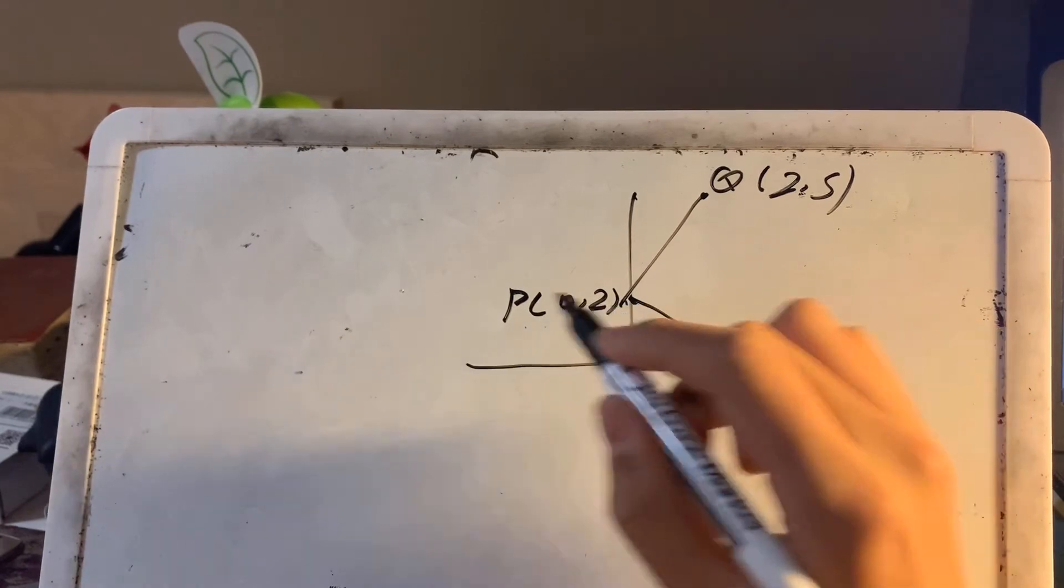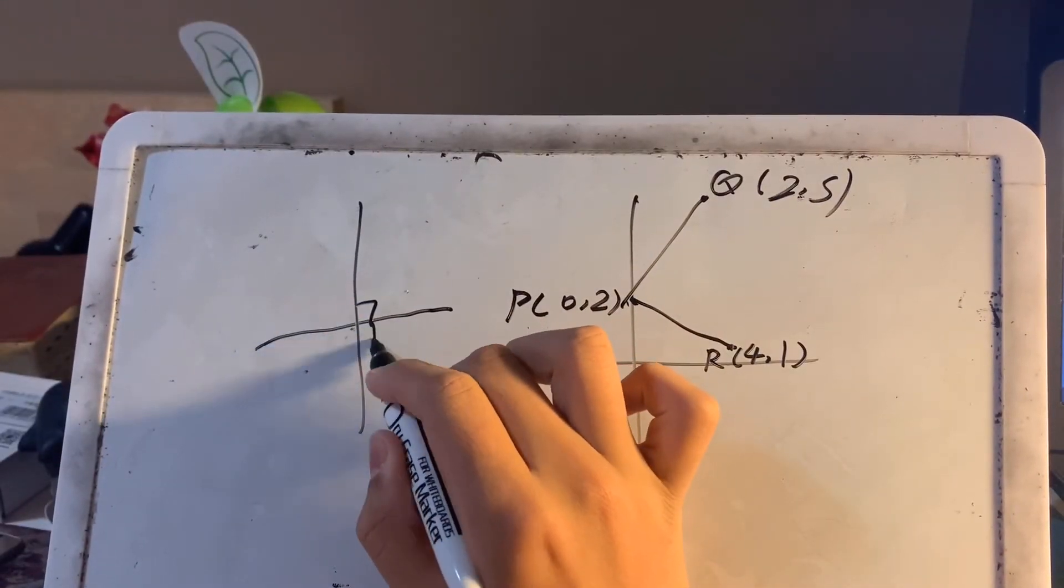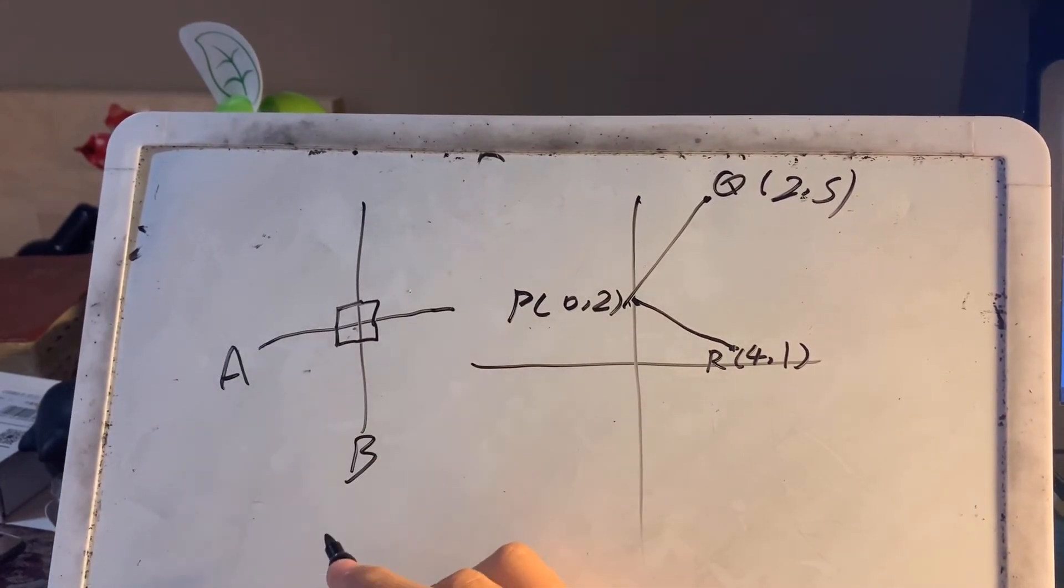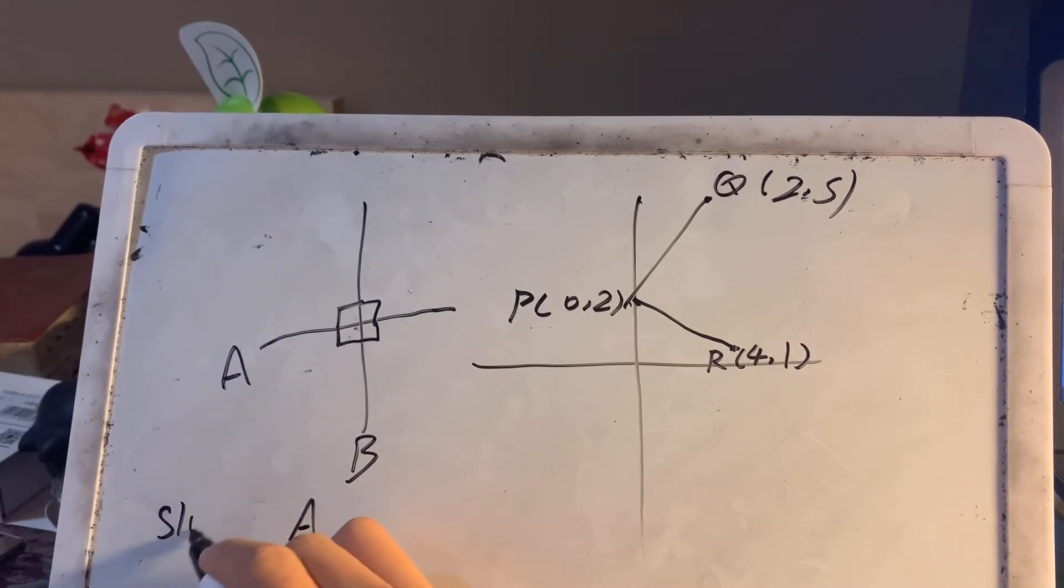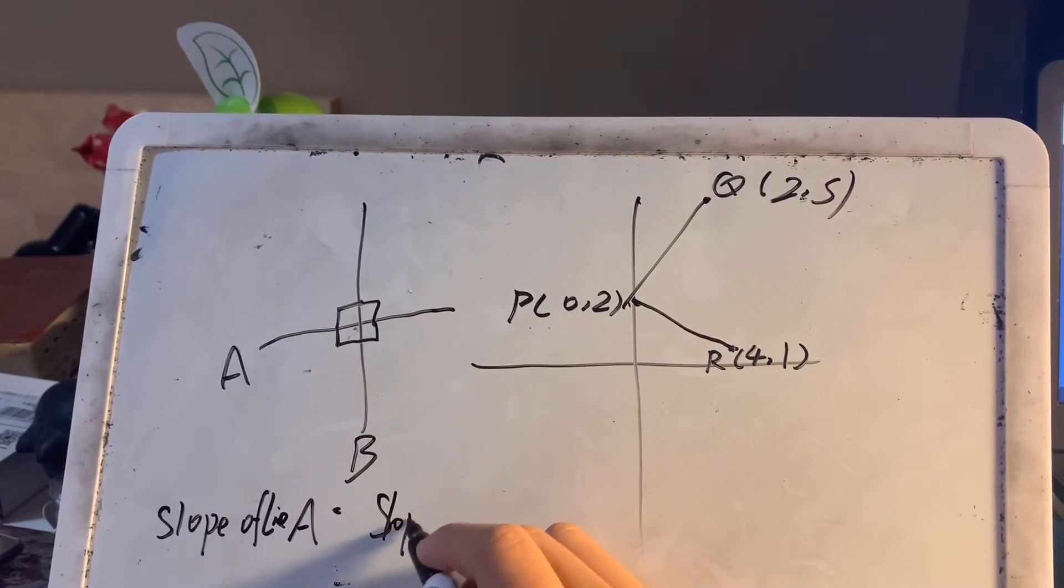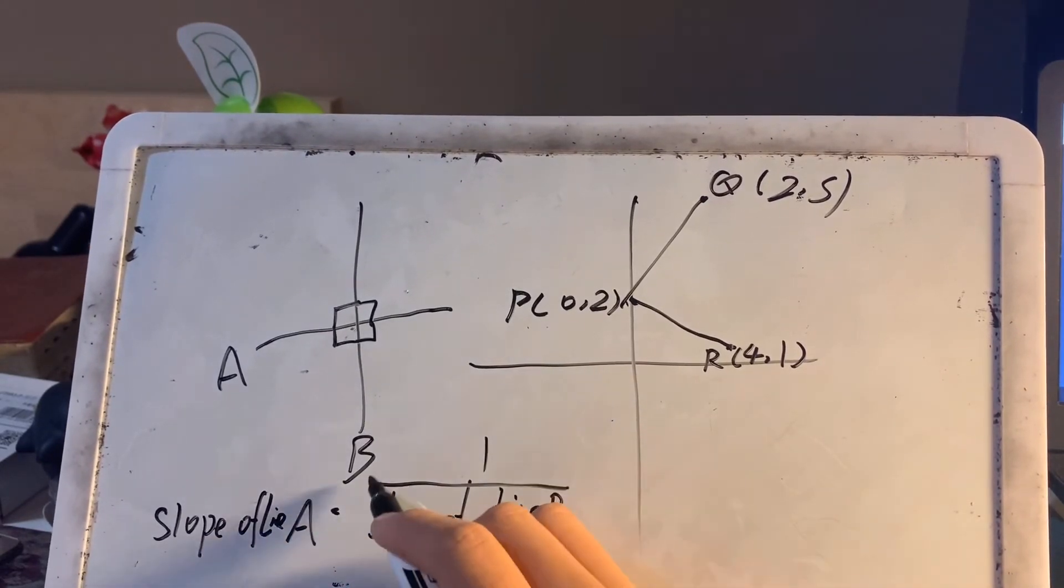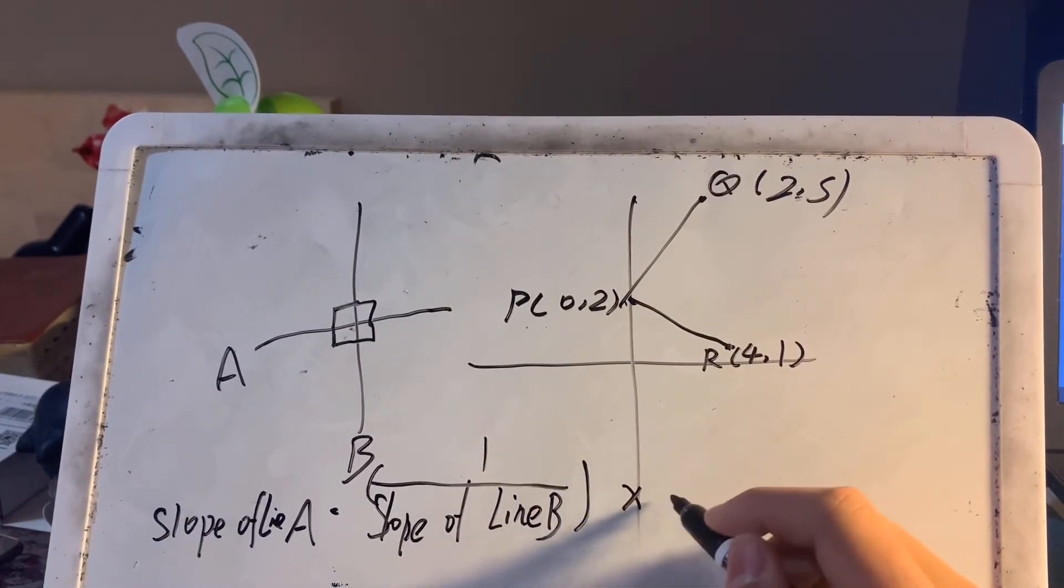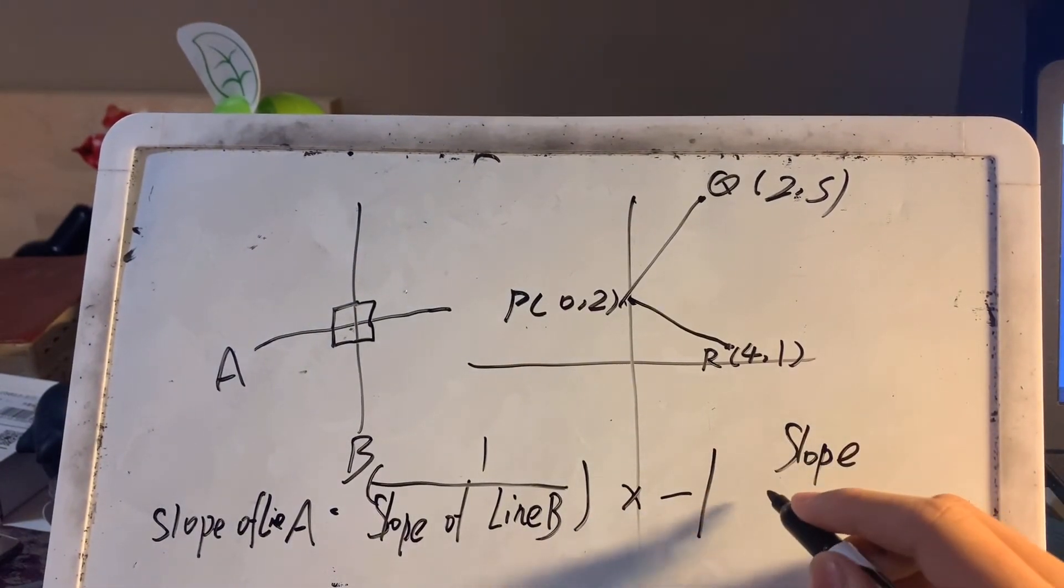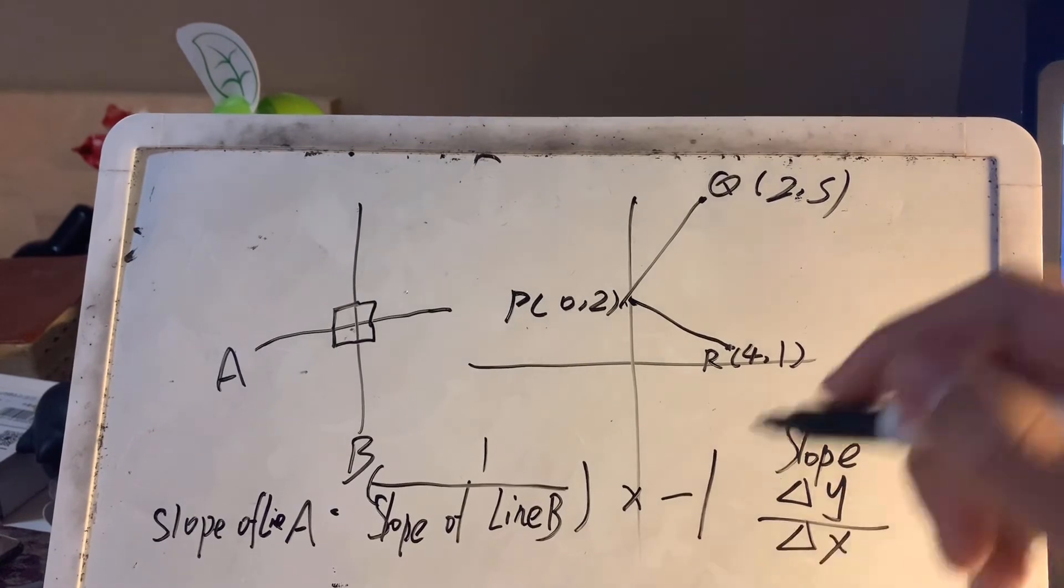To do that, we first need to know about the theorem. I hope everyone knows, like, if two lines are perpendicular, then we assume this line is B, this line is A. The slope of line A is equal to 1 divided by slope of line B times negative 1. And slope is the delta change of Y coordinates divided by the change of X coordinates.